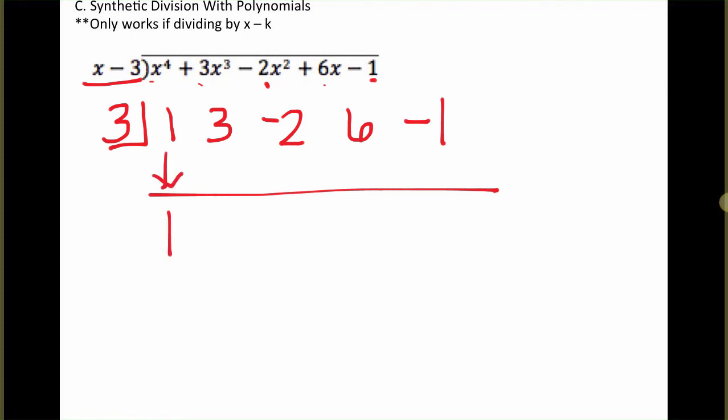Leave some space. Your leading coefficient will always stay the same. Then multiply by the number in the box. 1 multiplied by 3 is 3. And each time, we're adding here. 3 plus 3 is 6. 6 multiplied by 3 is 18. We add, get 16. 3 multiplied by 16 is 48. We add and multiply. 54 multiplied by 3 is 162. And when we add here, we get 161.